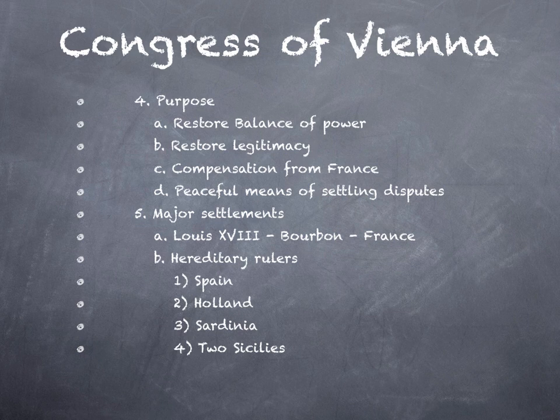Among the major settlements of the Congress of Vienna: France gets a monarchy restored — the Bourbon family is put back in place, and Louis XVIII becomes King of France in a constitutional monarchy. Hereditary rulers are also restored throughout Europe. Where Napoleon had deposed many kings, they were now put back on their thrones in Spain, Holland, Sardinia, and the Two Sicilies — modern-day southern Italy and the island of Sicily.